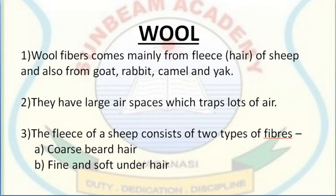The fleece of a sheep consists of two types of fibers: coarse beard hair, and fine and soft under hair that grows close to the skin. The under hair provides the fiber for making wool. Scientists who breed sheep have developed varieties that only have soft under hair, giving better quality wool and higher yield per sheep.